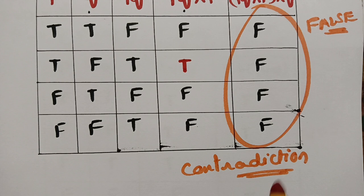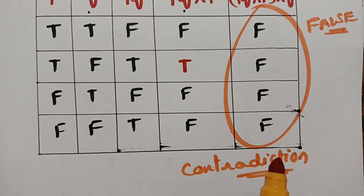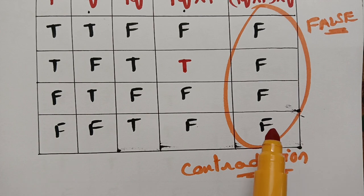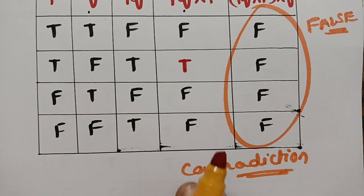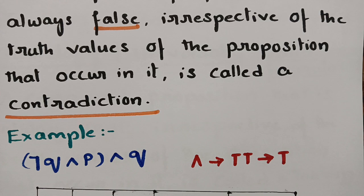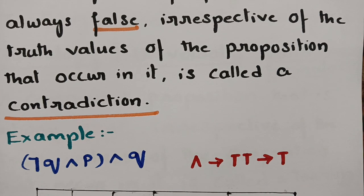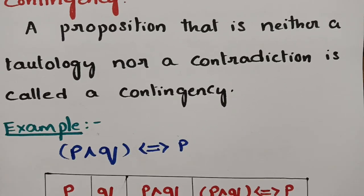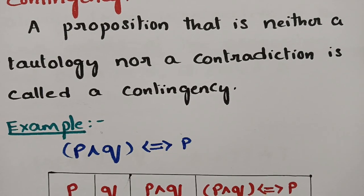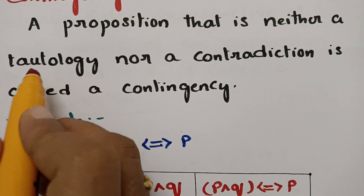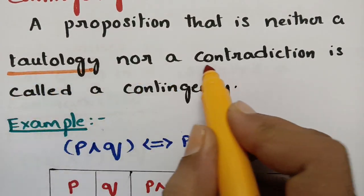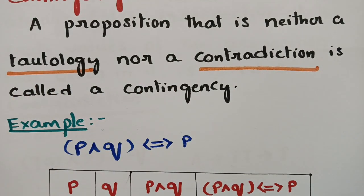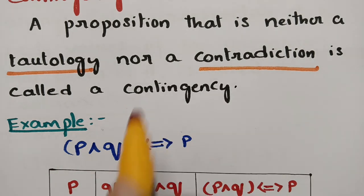So to summarize: if the compound proposition is always true, it is called a tautology; if the compound proposition is always false, it is called a contradiction. Coming to the next point — contingency. A contingency is a proposition that is neither a tautology nor a contradiction.